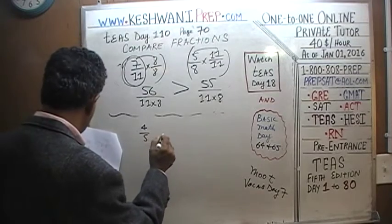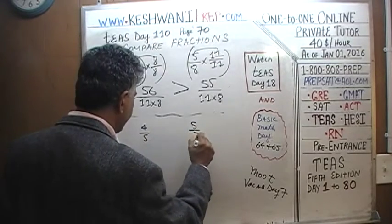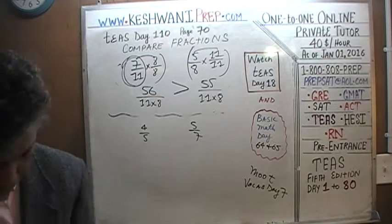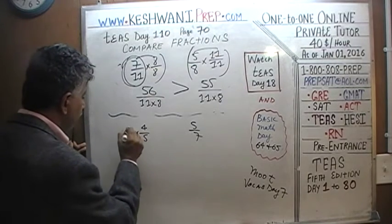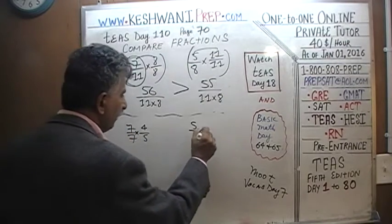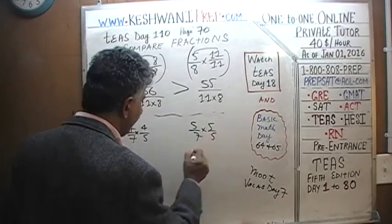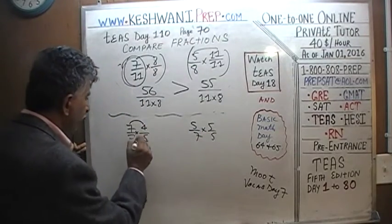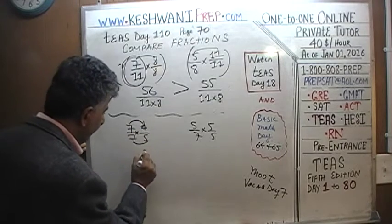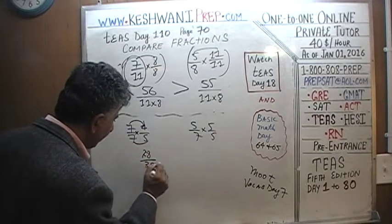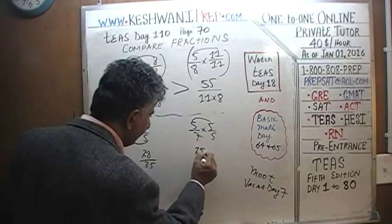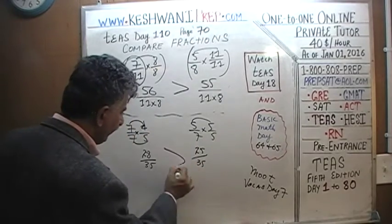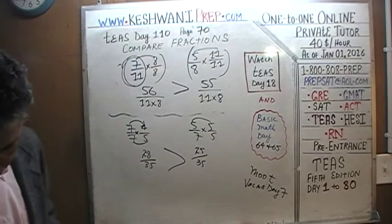Next: four-fifths versus five-sevenths. Multiply the first fraction by seven over seven and the second by five over five — both have a denominator of thirty-five. Four times seven is twenty-eight and five times five is twenty-five. Twenty-five is less than twenty-eight, so four-fifths is bigger than five-sevenths.